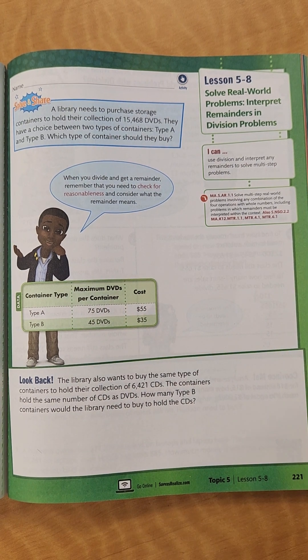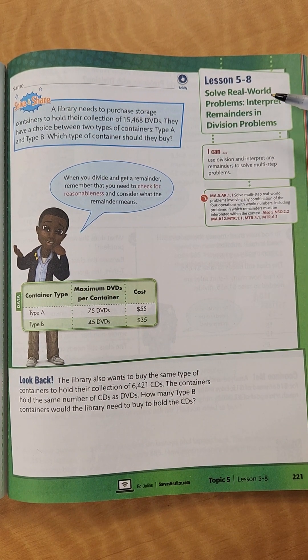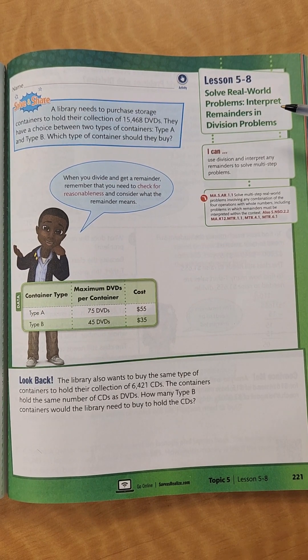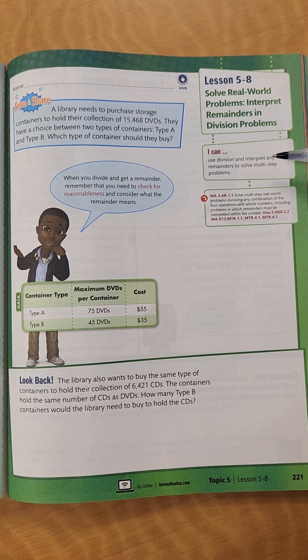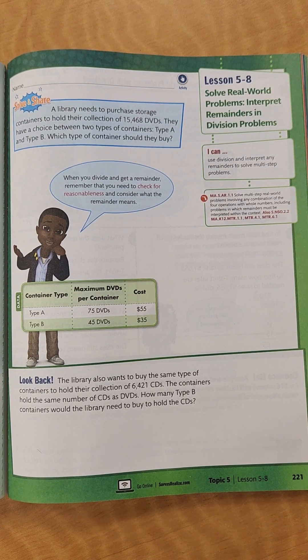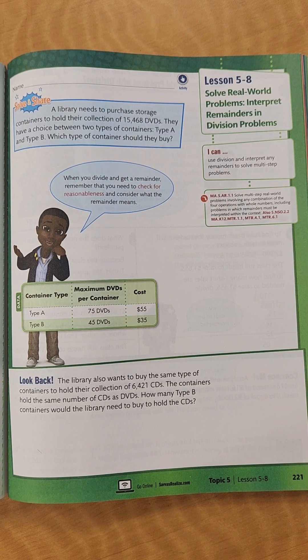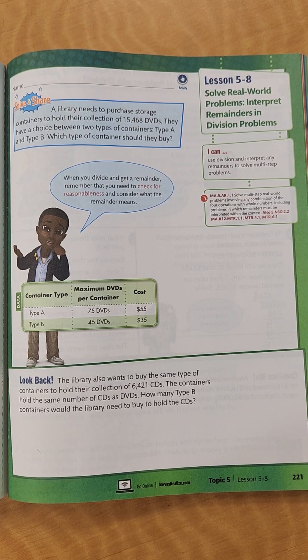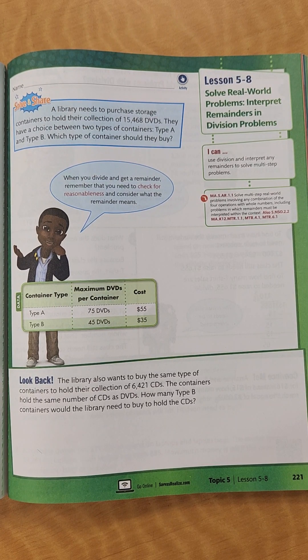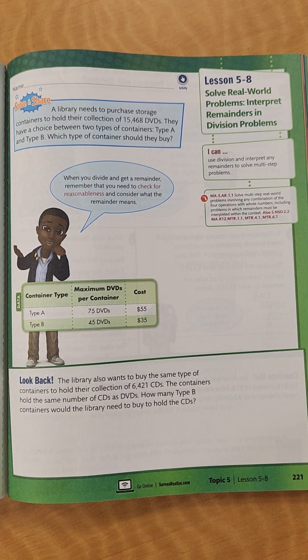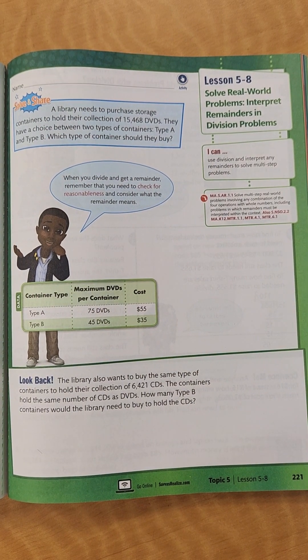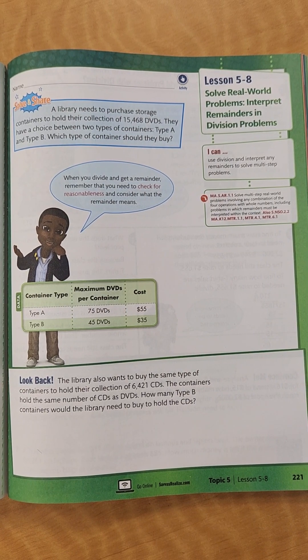Hey guys, here's lesson 5-8, Solve Real-World Problems, Interpret Remainders in Division Problems. Today our I Can statement is, I can use division and interpret any remainder to solve multi-step problems. So basically, we're taking all that we've learned with dividing and figuring out what do I do with this remainder? Is the remainder my answer? Is something else my answer? And I apologize if you hear whining in the background, Chip decided to come to work with me today.